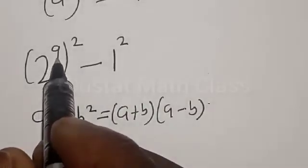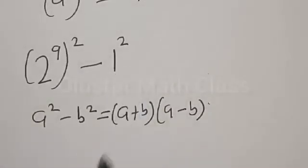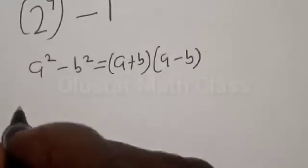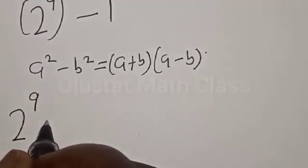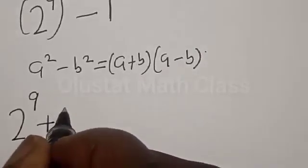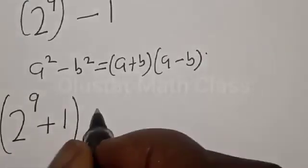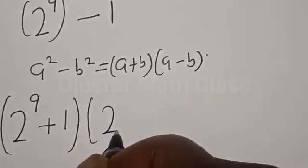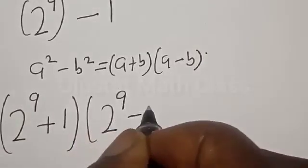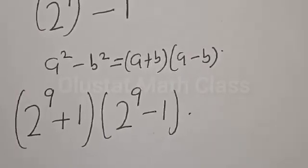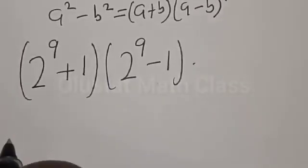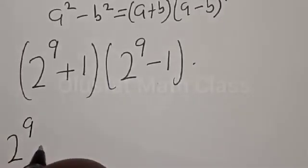Now let's substitute where our a is 2 raised to power 9 and our b is 1. Then we have 2 raised to power 9 plus 1, multiplied by 2 raised to power 9 minus 1. Now 2 raised to power 9 is equal to 512.